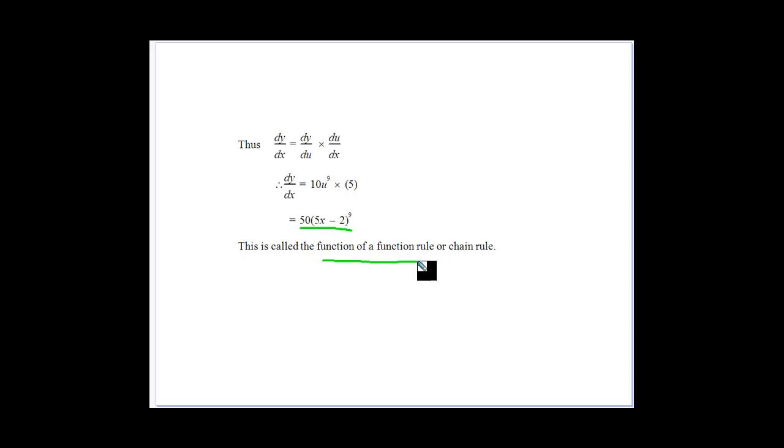We call this the function of the function rule or the chain rule. We can see how we can use and put one function in terms of the other. Now we don't always have to do that differentiation, but we get the idea.